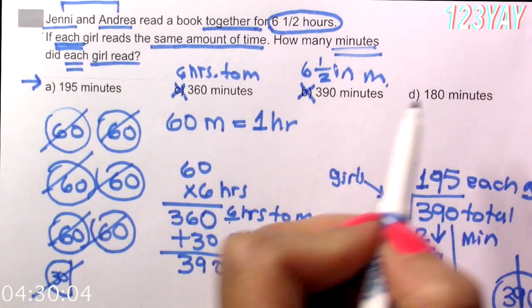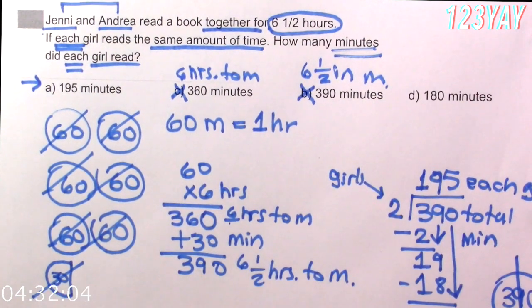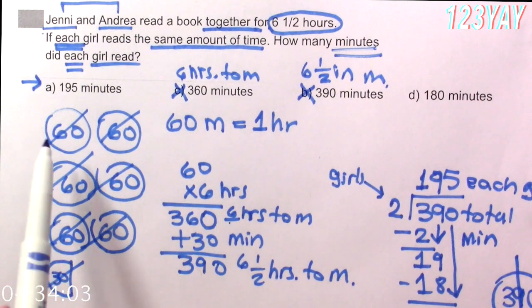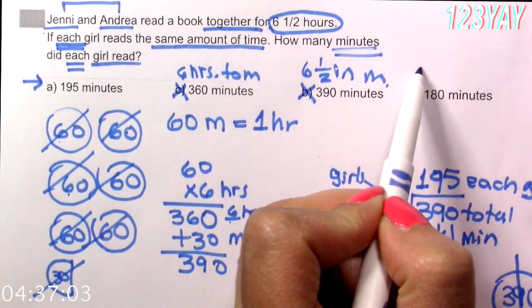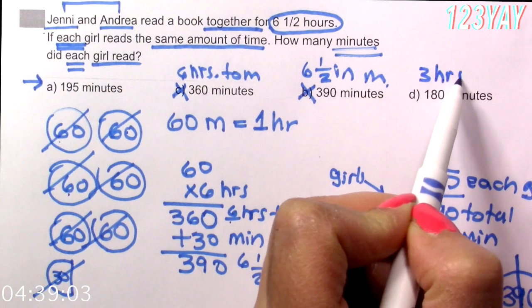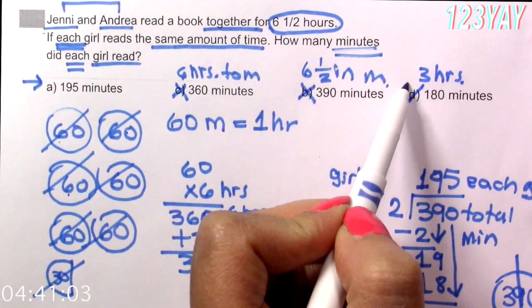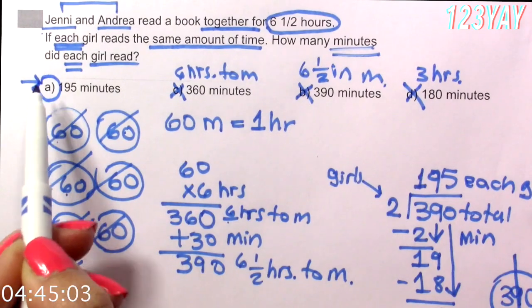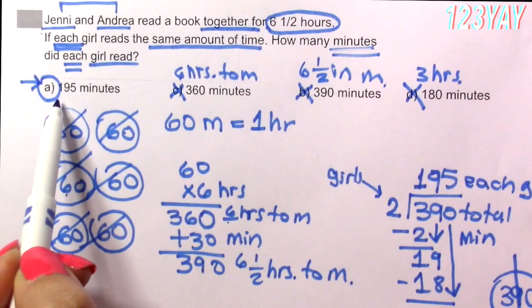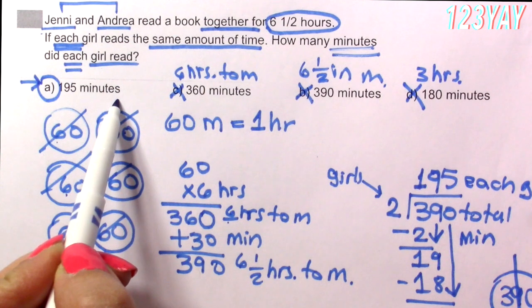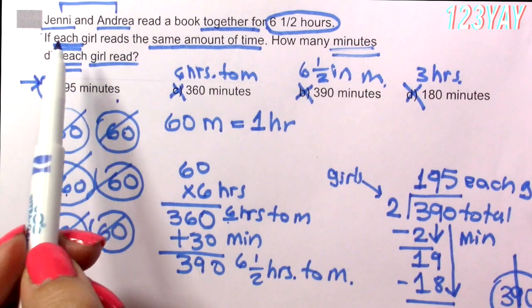And last but not least we have 180 minutes. What is this? Well, I know that 6 times 3 is 18 so this is just a random answer that is 3 hours. But this is not the answer. Definitely A was the correct answer. This is 6 and a half hours divided by 2 and now I know